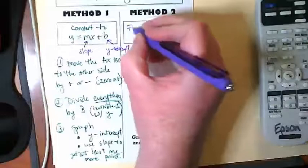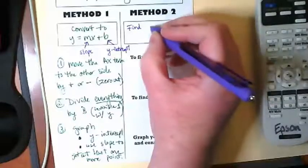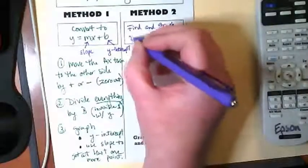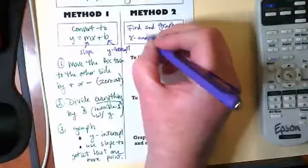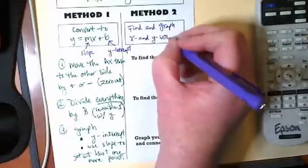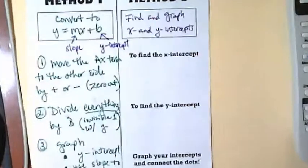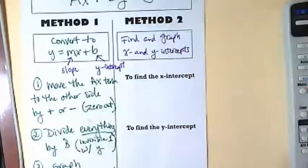All right, so the second form is to find and graph the x and y intercepts. Remember, if we can find two points on a graph, we can make the graph. As long as we can put two points on there, we can basically connect those dots.